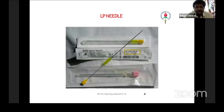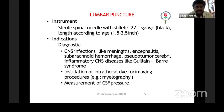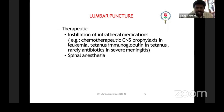Coming to the LP needle — it is the lumbar puncture needle. We have a stilet and a needle. The sterile spinal needle with stilet is the usual thing. The size is 22 gauge, which we usually use for children, color coded as black in color, and length may vary. The main questions they will ask: why is LP needle used? It is used for diagnosing meningitis, encephalitis, and other CNS infections. You can instill any dye for imaging purposes and measure the CSF pressure. Therapeutically, you can give medications, especially chemotherapy for leukemia intrathecally.